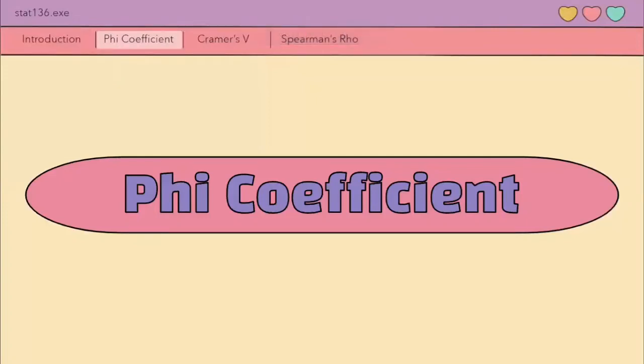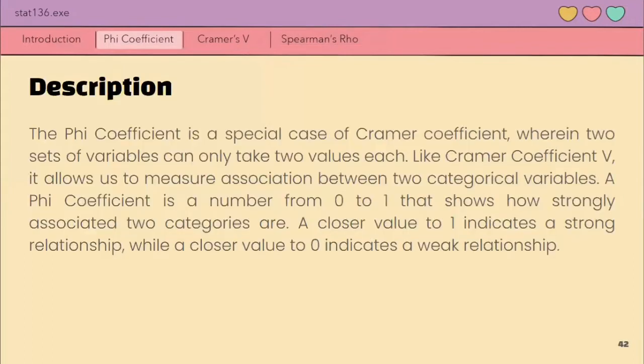So now, we are going to discuss the phi coefficient. The phi coefficient is actually a special case of Cramer's coefficient V that we discussed earlier. In our case, phi coefficient measures the association between two binary variables. This means that if we can test the association of data in an r by k table, for phi coefficient strictly, it's only for data which can be cast in a 2 by 2 contingency table.